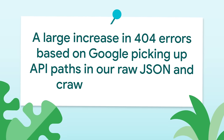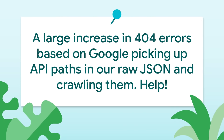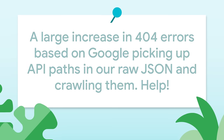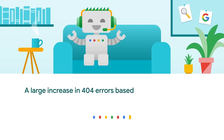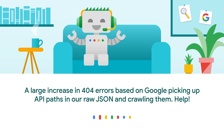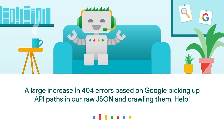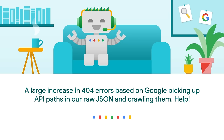Evan is asking: on our websites, we've recently been seeing a really large increase in 404 errors based on Google picking up API paths in our raw JSON and crawling them. Is this something we should be worried about? No, you don't need to be worried about it. But if you want to avoid Googlebot crawling these URLs, feel free to use robots.txt to disallow crawling on them. When Googlebot finds URLs somewhere, it usually crawls to check if there's content that could be useful to index and show to users. If we get a 404 doing that, then it's not going to be useful for users and not going to be ending up in the index.